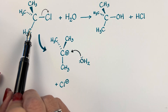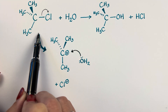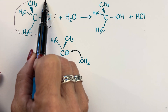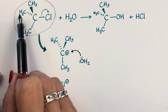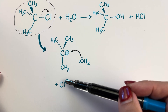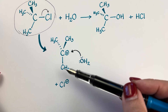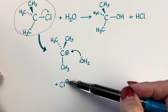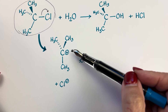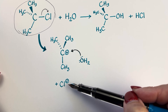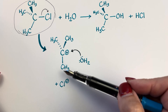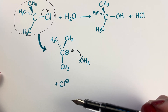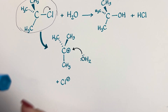Notice something here. We have a single molecule that's neutral, and we've formed two entities — one is positive, one is negative. When we add up the charges, that is neutral. So we are maintaining a charge balance — we need to make sure that we do that.